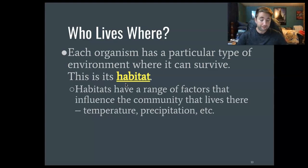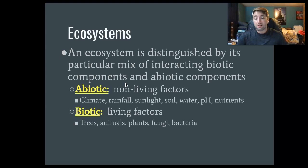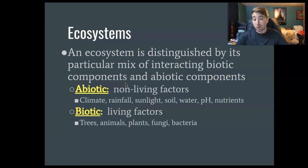An ecosystem can be defined by its living and non-living things. Two important words: abiotic and biotic. The letter 'a' at the front usually means 'not' or 'no.' Biotic means living, so abiotic means non-living. Abiotic factors are things that aren't alive — climate, rainfall, sunlight, pH, nutrient levels. Biotic components of an ecosystem include trees, plants, fungus, decomposers, and all those different living things.